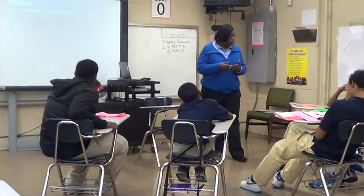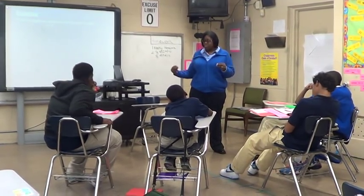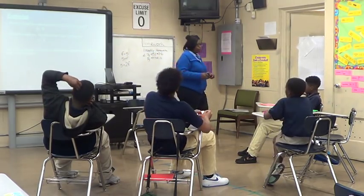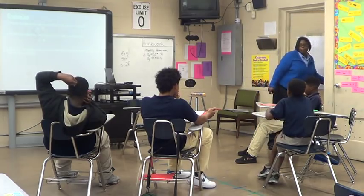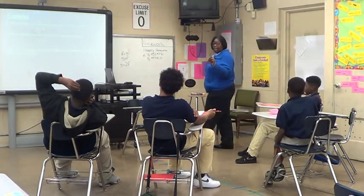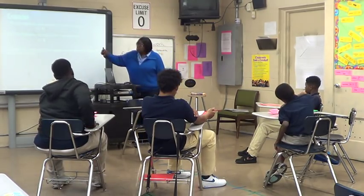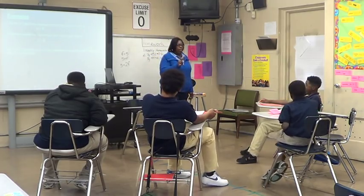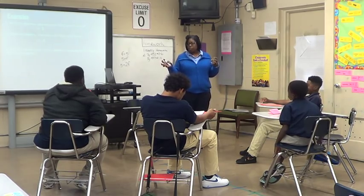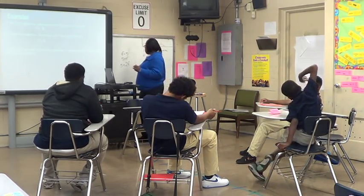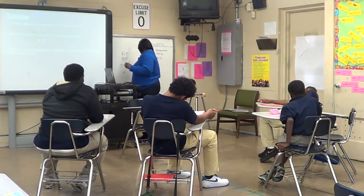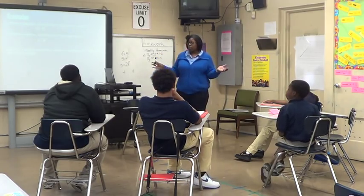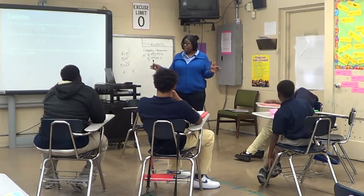What you're going to learn how to do is to go from words to write an expression. It says: five more than. More than means add. So the first operation is to add. Then: twice a number. What is twice a number? That's multiply. So the second operation is multiply. So you're going to add something and multiply something — we have two operations.